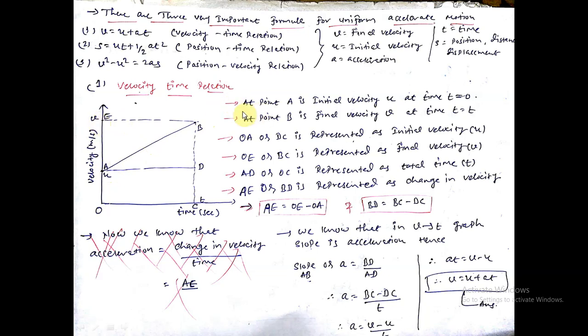I have written each line of each graph at each point. Point A is initial velocity u at time t = 0. So point A is our initial velocity and our time is zero. At point B, point B is final velocity v, and our time is t. Look, for B our time is t. Now look, OA or DC - both lines OA and DC are the same. So OA and DC are represented as initial velocity. Both these lines, this whole line OA can be called initial velocity and DC we can also call initial velocity.